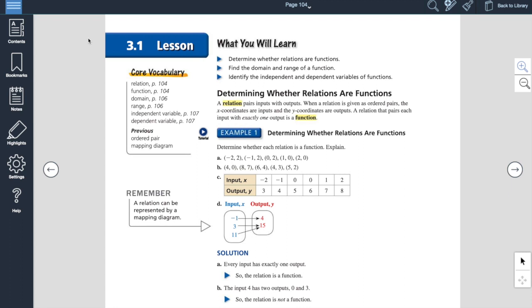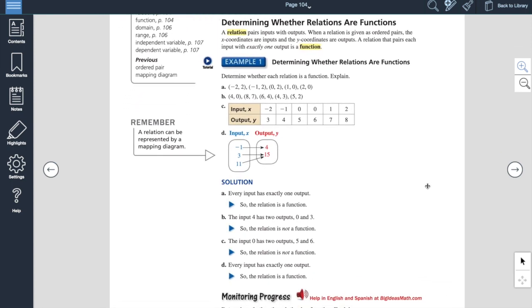You guys should be in your e-book. And if you go to page 104, you're going to find Section 3.1. Now, on 3.1, the main part of this is dealing with functions. And we spent quite a bit of time this year talking about functions. Remember, a function is where every input has exactly one output. So they give you some examples here because it can come in a few different varieties here.